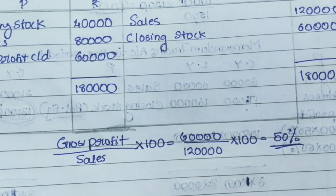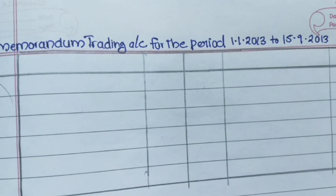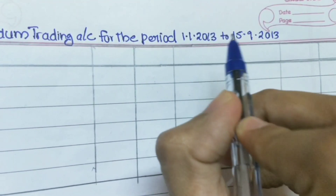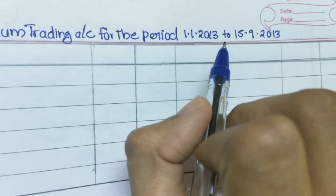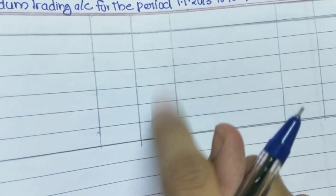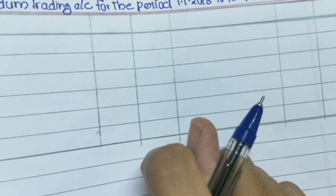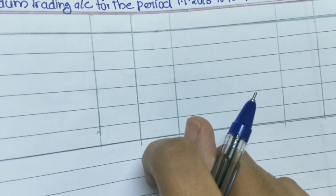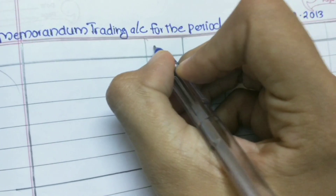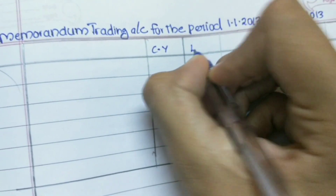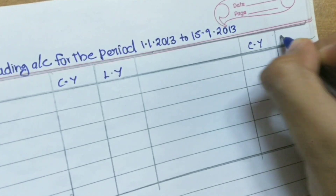Now we are going to prepare the memorandum trading account for the period January 1st 2013 to the date when the fire occurred — September 15th 2013. You will see there are two amount columns. We are preparing two columns so that it's clear how we are doing it — the first column for the current year amounts and the second for the last year amounts.